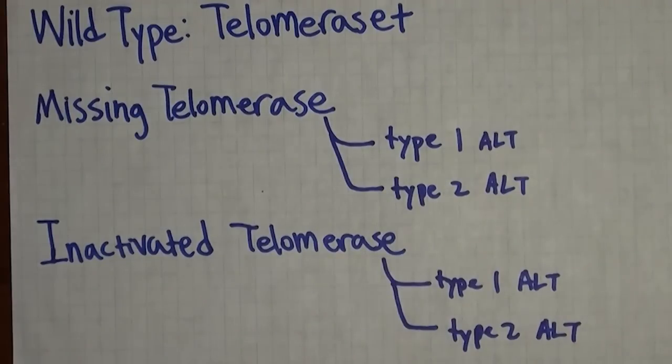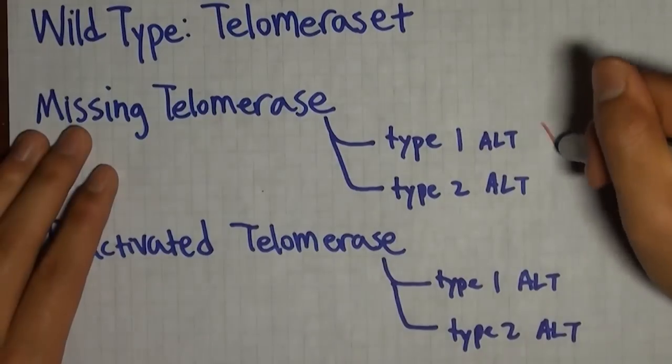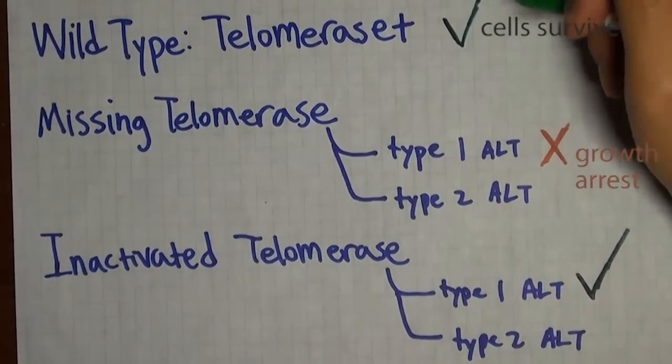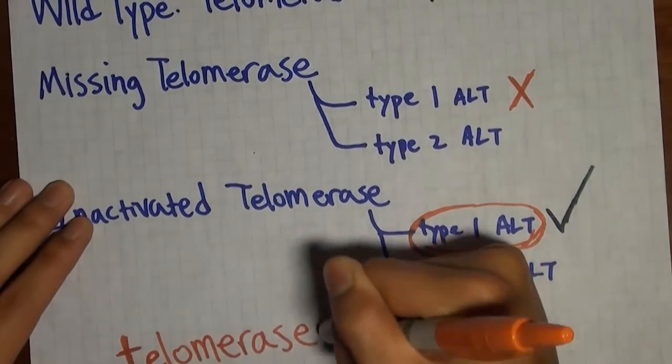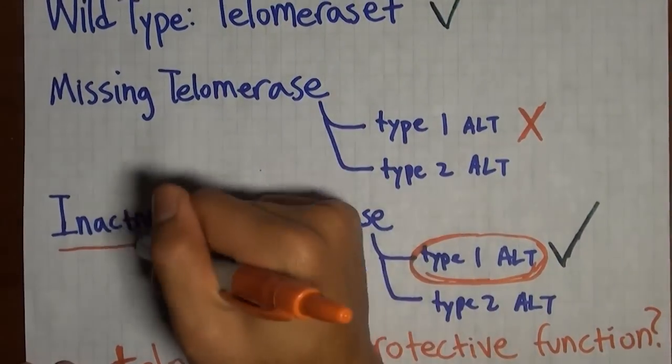Interestingly, no growth effect was observed in ALT cells with inactive telomerase only. So in conclusion, my project presents a new way to circumvent alternative lengthening of telomeres in cancer without affecting normal senescing cells and that telomerase might have a protective function in addition to telomere lengthening.